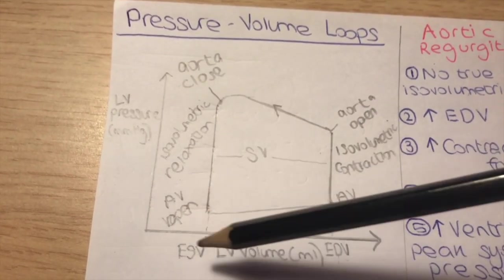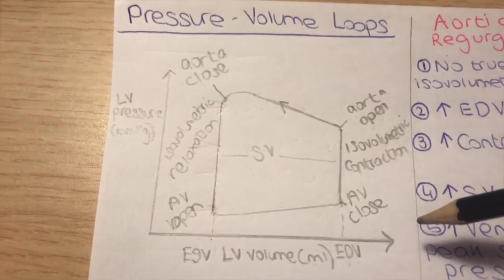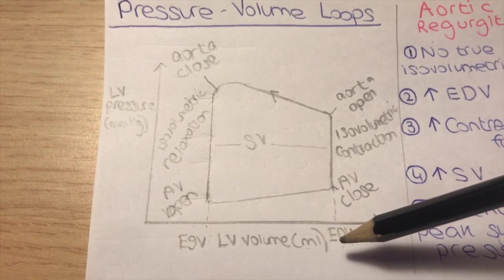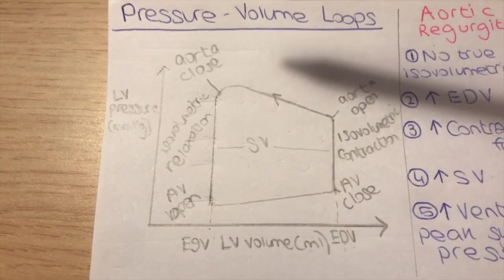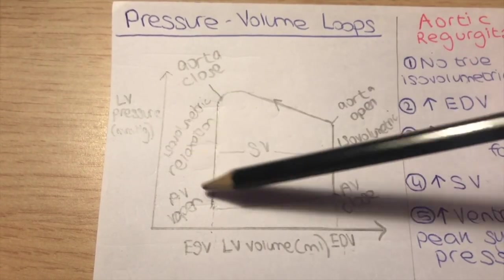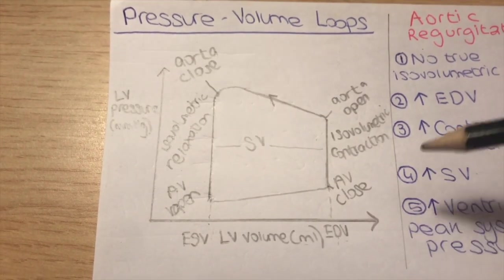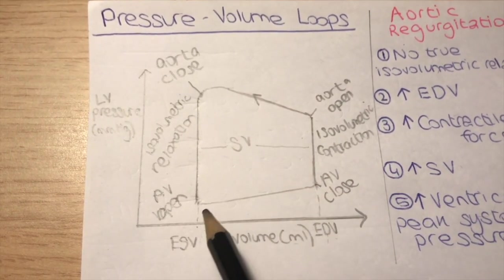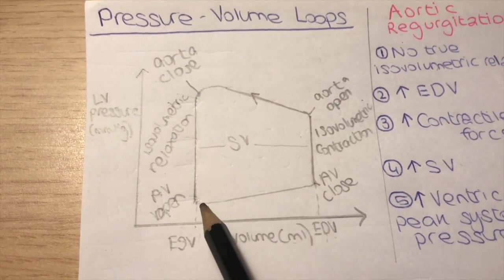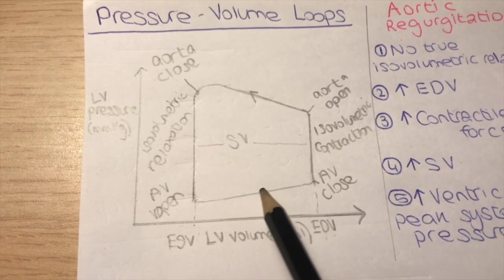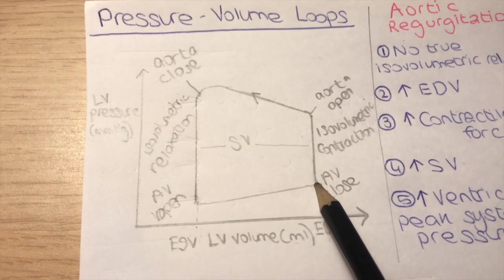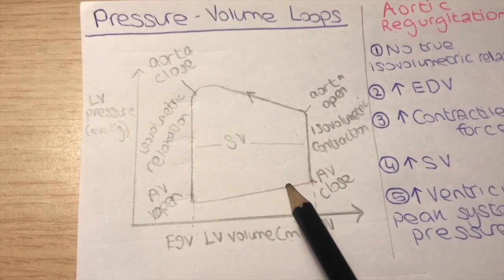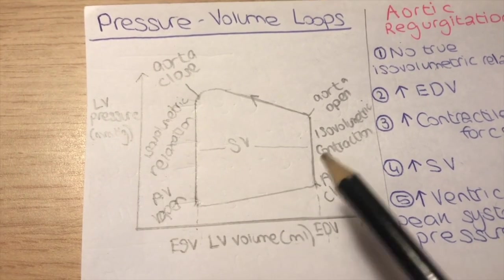The x-axis of the pressure-volume loop refers to the left ventricular volume, whereas the y-axis refers to the left ventricular pressure. Looking at this line here, this is when the left ventricular volume is increasing — this is the point at which the left ventricle is filling with blood.